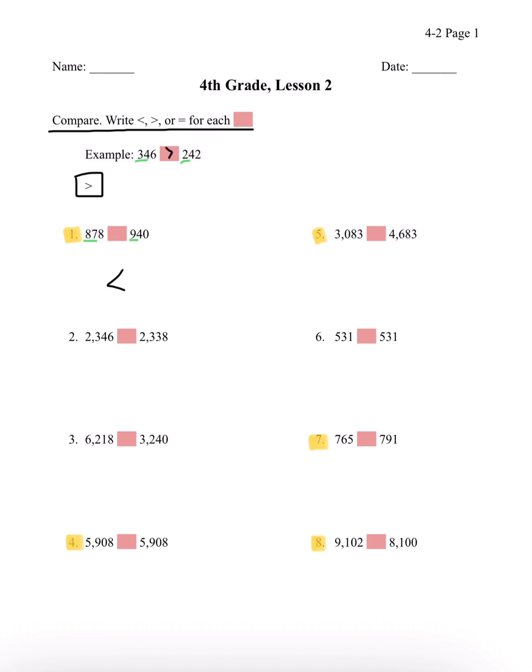Number 4, we have 5,908 and 5,908. If we look at each of the numbers closely, all four digits are the same. So our sign for this one is just going to be the equal sign, since they are the exact same numbers.